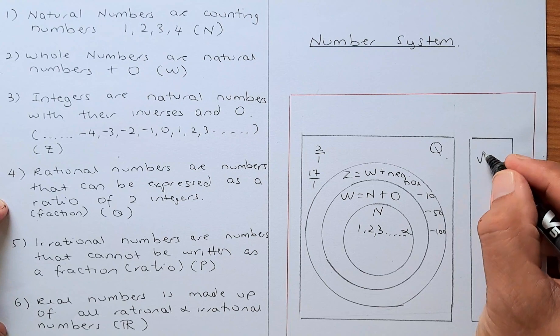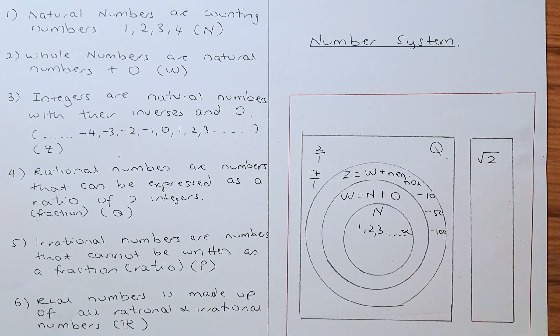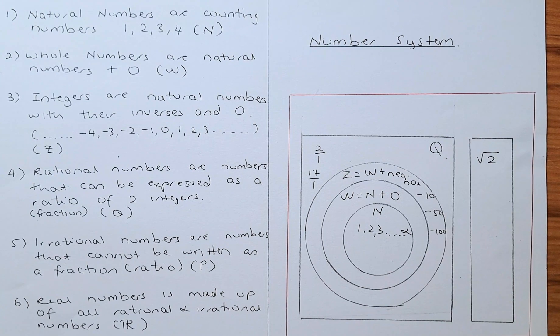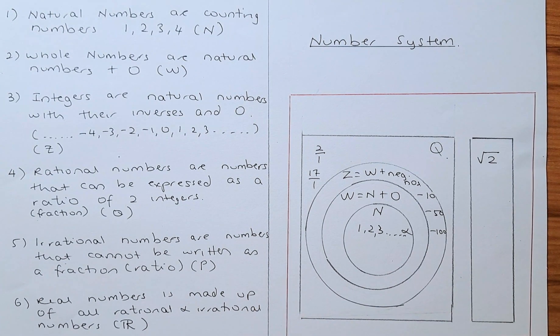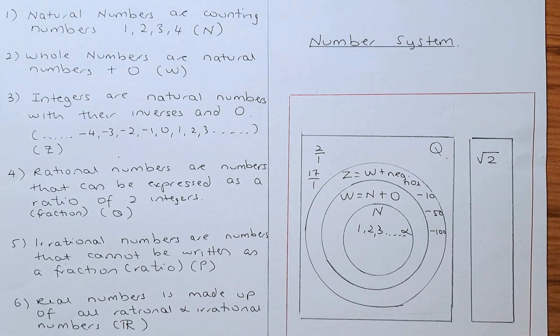...if you are talking about root 2, it is 1.41421356237309 and carry on and carry on, and it is not terminating. So that's why it cannot be written as a fraction.